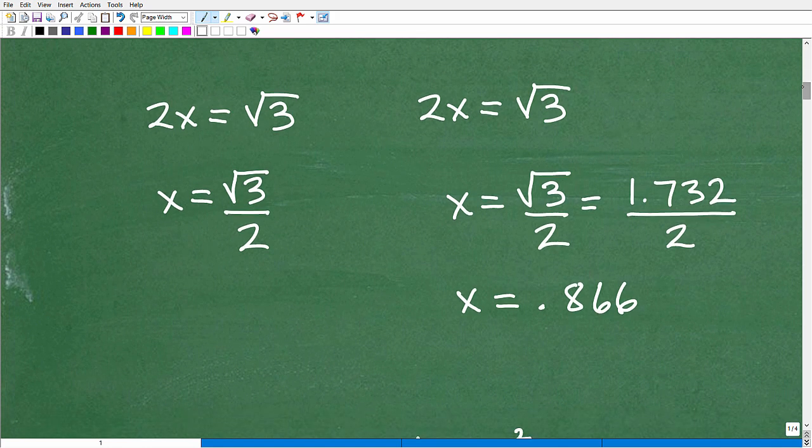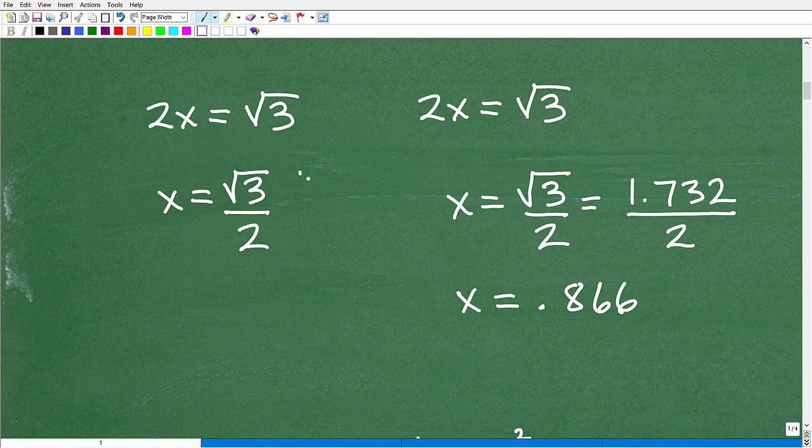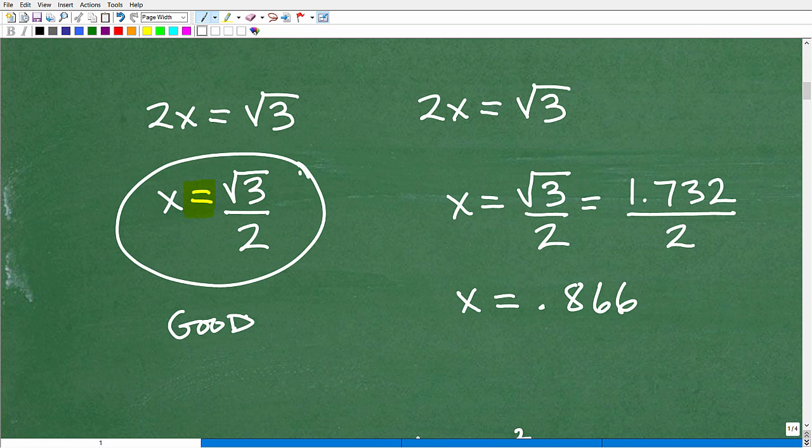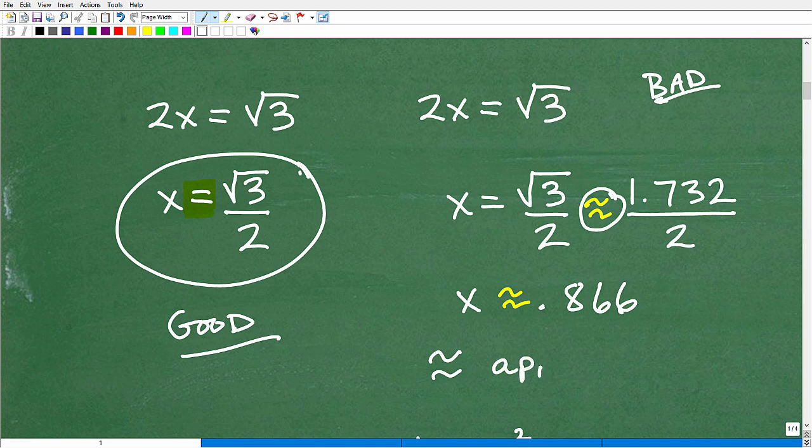So here is our problem again. 2x is equal to the square root of 3, and we have our answer right here. This use of this symbol right here is correct. This is good. This is good. This is bad. This is bad. And this is good. Now, why is this bad? Well, this becomes bad at this point right here. Right at this point. The symbol we should be using is this. And our final answer needs to look like that because this symbol right here, this is the approximate symbol. In mathematics, this means approximately. Approximately. This means exactly. Equal means 100%. Like that's, it's exactly what it's equal to.